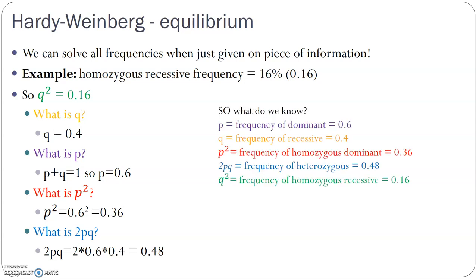So in this example: the dominant allele frequency is 60%, the recessive allele frequency is 40%, the homozygous dominant frequency is 36%, the heterozygote frequency is 48%, and the homozygous recessive frequency is 16% — which is what we started with. Remember, you can add all of these together to double-check your math. It should equal 1, or very close to 1 due to rounding.